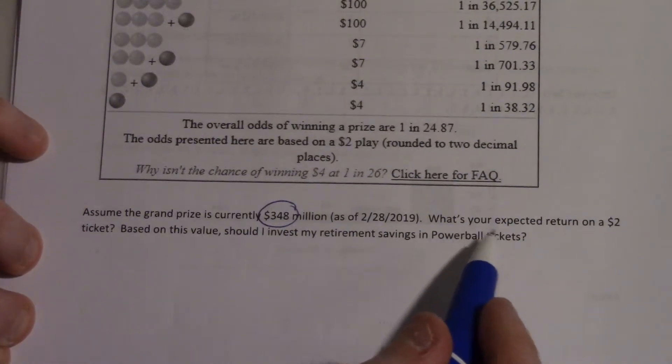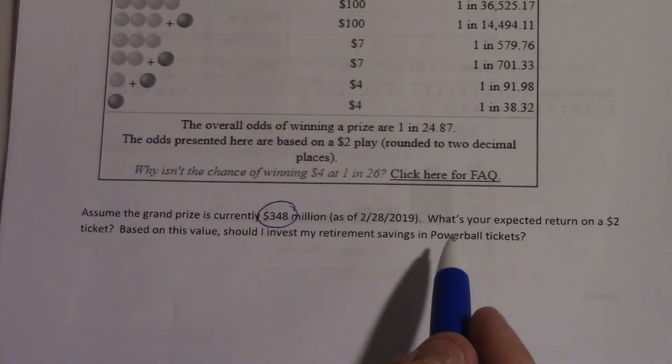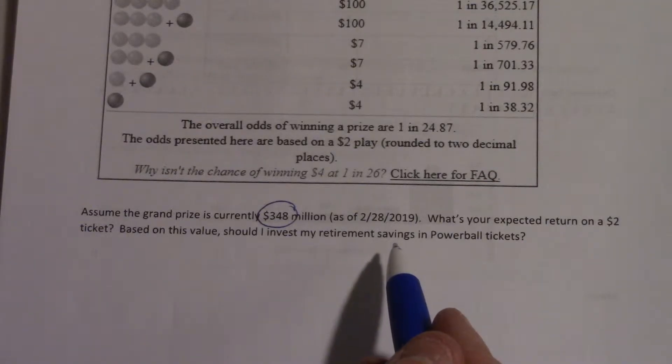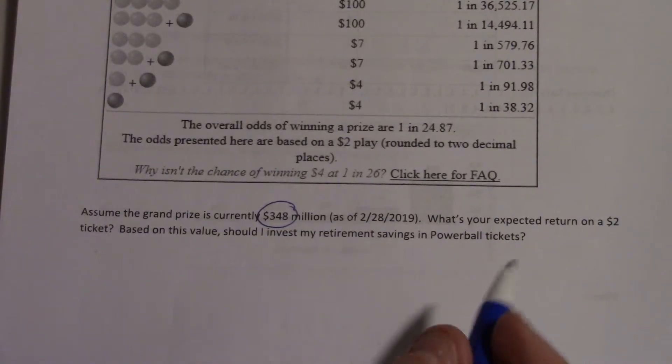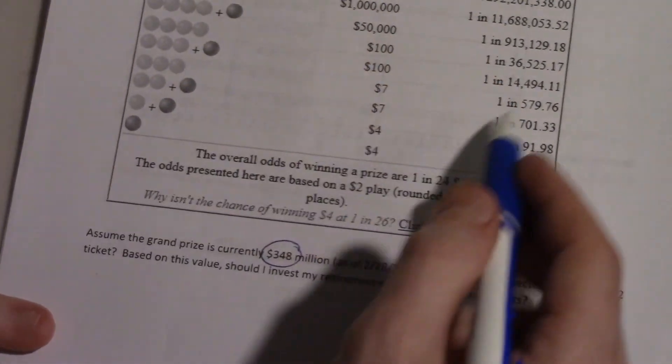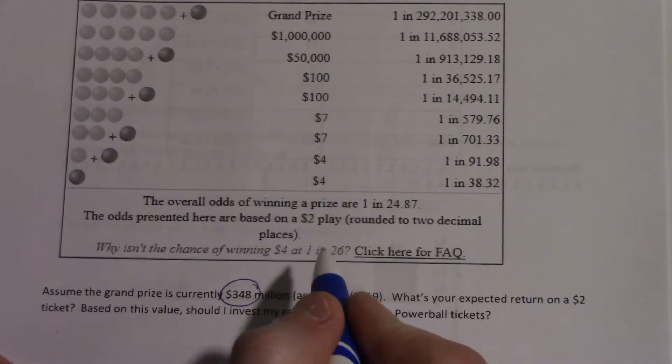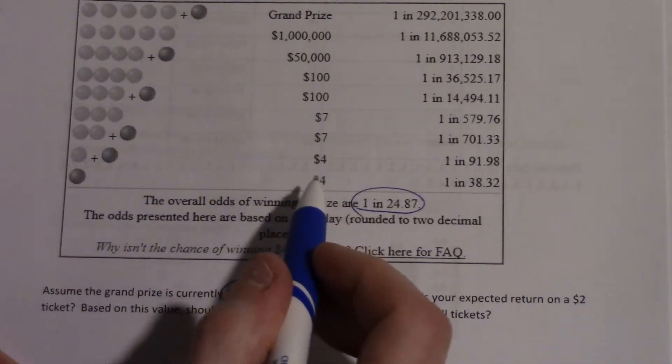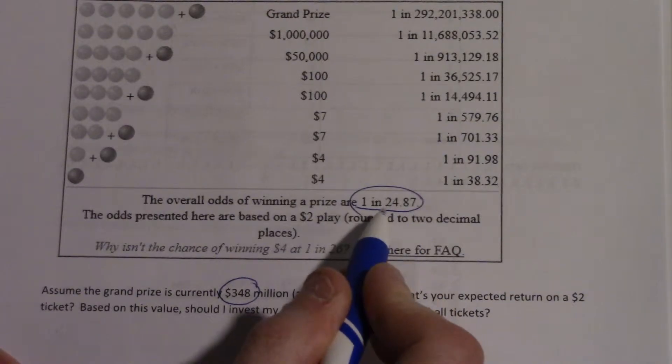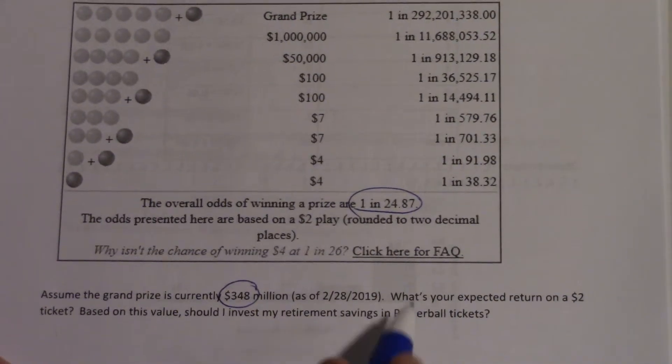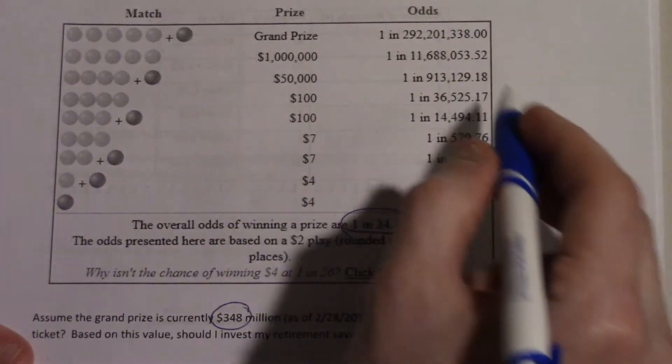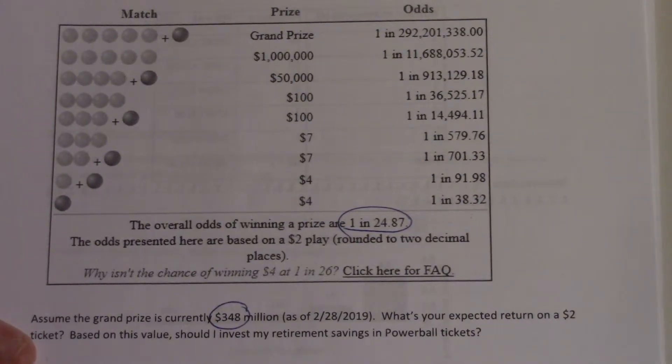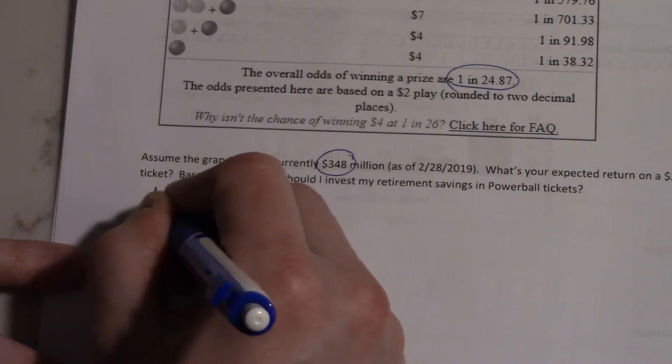So what we want to know is, what's our expected return on this 2 dollar ticket? Or in other words, on average, how much money will we win per ticket? So we can answer the question of, should we use our retirement savings to buy Powerball tickets? Probably not. So, within this table, they're telling you all the amounts you could win. They tell you the overall chance of winning something. Anything from 4 dollars up to the grand prize. The chance of winning one of those is 1 in 24.87. So this is almost a valid probability distribution. If you add up all these numbers, what you'll find is they don't add up to 1. There's an outcome missing here.